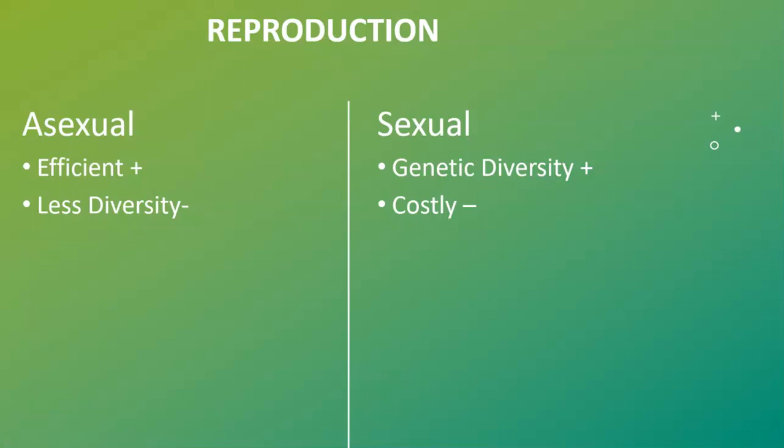First, we're going to cover reproduction. You're going to want to go look through this PowerPoint again, but the two things I would focus on most are asexual versus sexual reproduction — know at least the pluses and minuses of each. For asexual, the plus is efficiency, but you have less diversity; they're all kind of clones. For sexual reproduction, you're going to have genetic diversity, but it's more biologically costly — we have to find somebody and do all this stuff to ultimately have offspring.